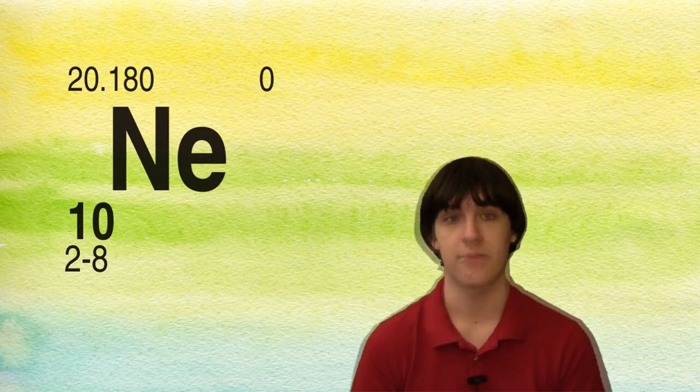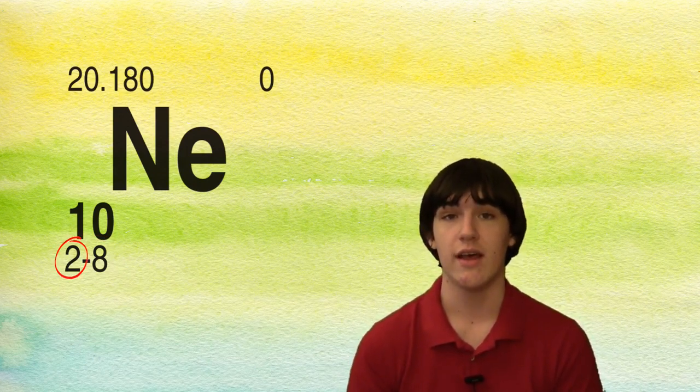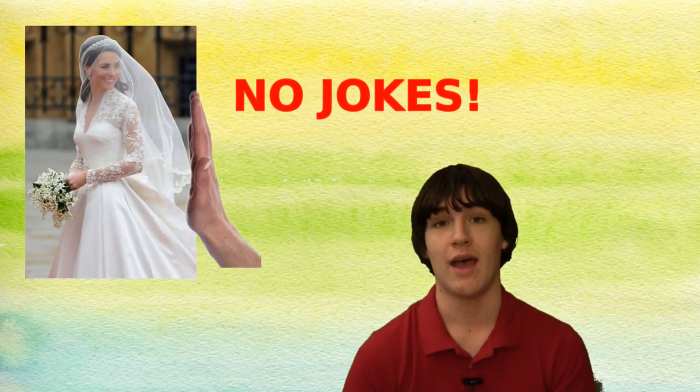For example, argon has ten electrons. This is represented with two dash eight. Two in the inner shell, and eight in the outer shell. That outer shell is really important. This outer shell is called the valent shell, and is always the very last shell of an atom. It can only hold eight electrons no matter how many shells there are.